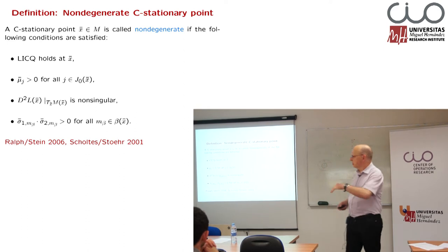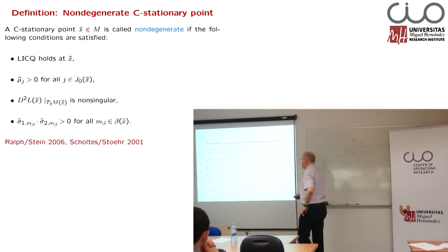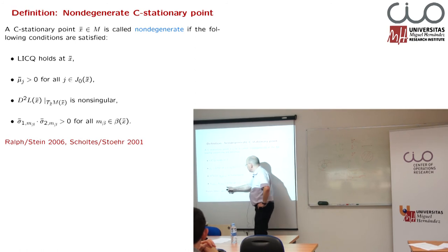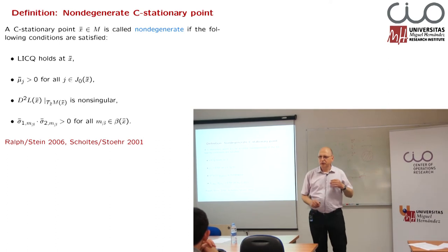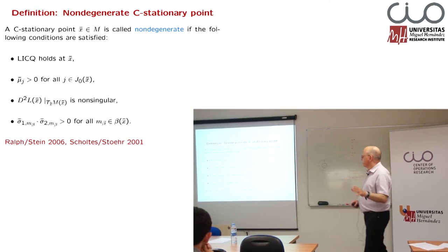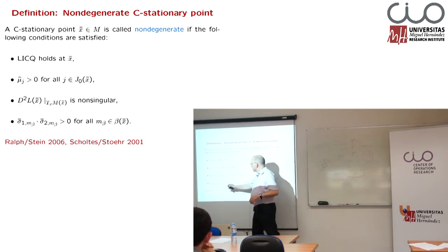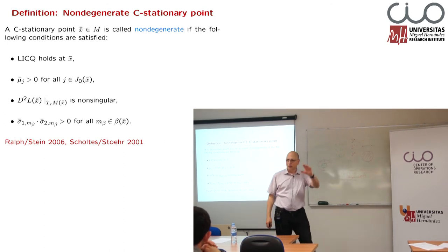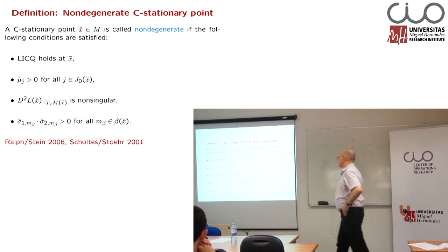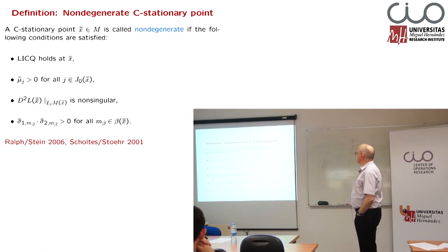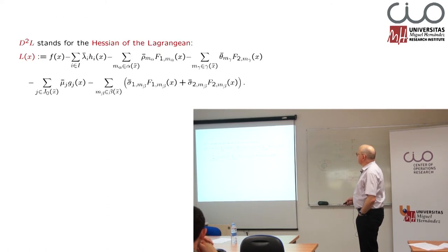And, remember what we said — the product of those bi-active multipliers has to be non-negative, as both have to be non-negative or both have to be non-positive. We assume now that the product is greater than zero, meaning none of them is zero: both are positive or both are negative. This is non-degenerate C. There are different sources for this — it was used or introduced as the non-degenerate C stationary point.